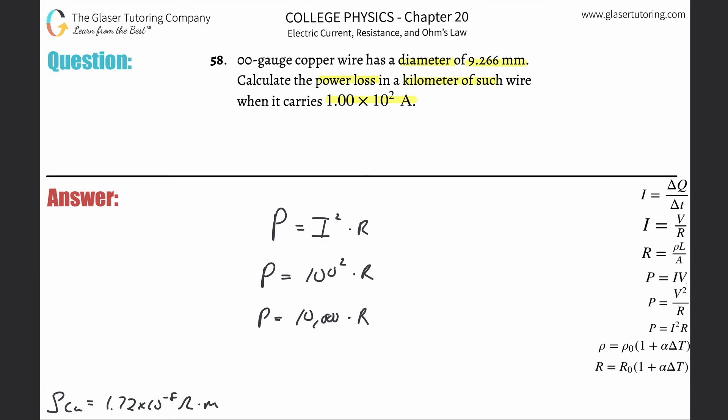Now in order to do that, they gave us the diameter. Almost exclusively, as soon as I'm given a diameter and I'm thinking about resistance, I jump right to the formula on the right hand side. Resistance will equal the resistivity of the material multiplied by the length divided by the cross-sectional area.